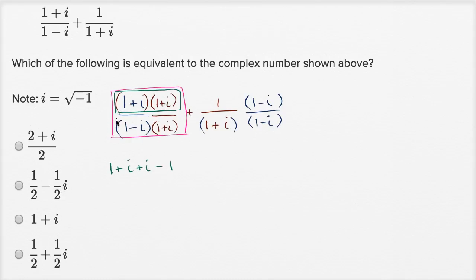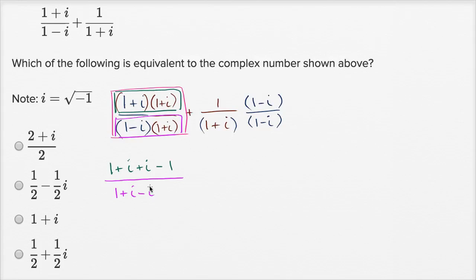For the denominator, (1+i)(1-i) — you could recognize this as a difference of squares, but let's multiply it out. One times one is one, one times i is positive i, negative i times one is minus i, and negative i times positive i: i times i is negative one, but with the negative out front, it becomes plus one.